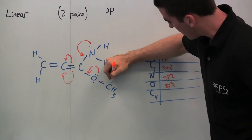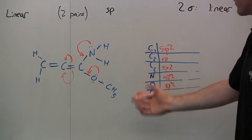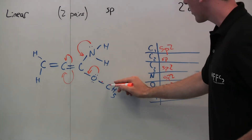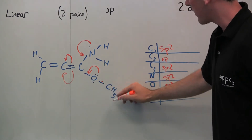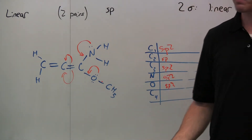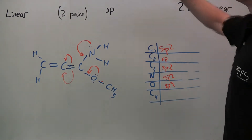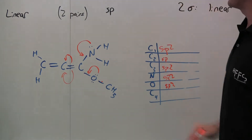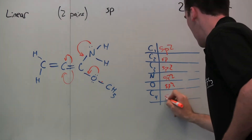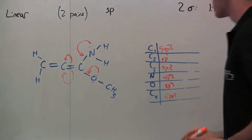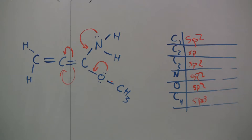Now we get to our last carbon — this methyl group hanging off here. This carbon is bonded to oxygen and three hydrogens, so it has four sigma bonds, therefore four VSEPR pairs, and this is our SP3 hybridization. That is the way to characterize atoms in a molecule: find the VSEPR pairs, determine the hybridization, and therefore the VSEPR or electronic geometry.